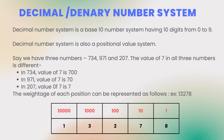We are used to the decimal, or base 10, number system. The decimal number system is a base 10 number system having 10 digits from 0 to 9. This means that any numerical quantity can be represented using these 10 digits. The decimal number system is also a positional value system, which means that the value of a digit depends on its position.